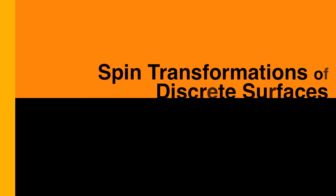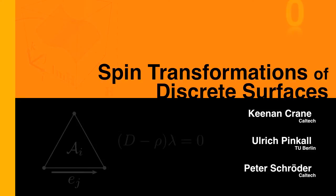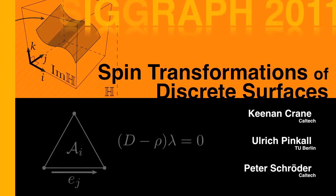Hi, I'm Keenan Crane from Caltech, and I'm going to take a look at a fairly fundamental question in geometry processing, which is how do we process surfaces while still preserving important features like texture or mesh quality?